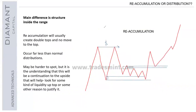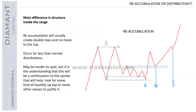Just reaffirming: the main difference is the structure inside the range. Reaccumulation will usually create double tops with no move to the top, and it will occur far less than normal distributions — maybe harder to spot as well. The key is understanding that it's a continuation to the upside. You look for the liquidity, look for where price is trying to go, where price is reacting off. If you've got no lower low, no break of structure down, you're still seeing bullish price action and liquidity at the top.